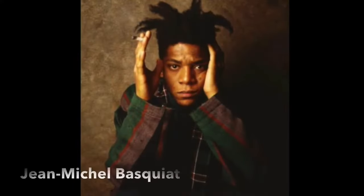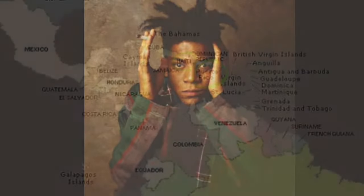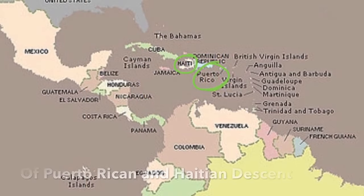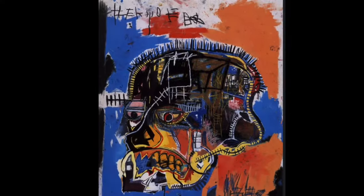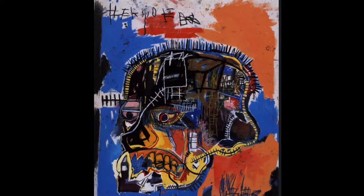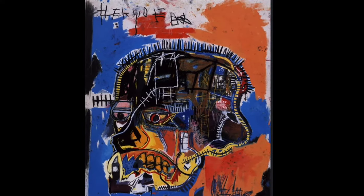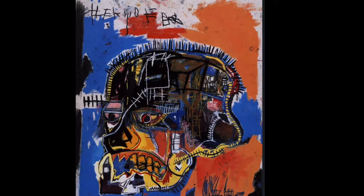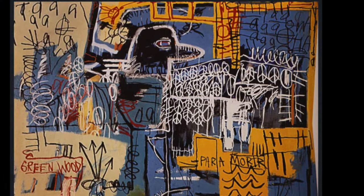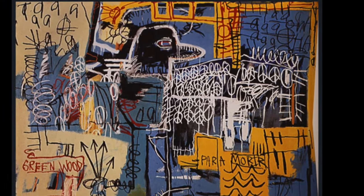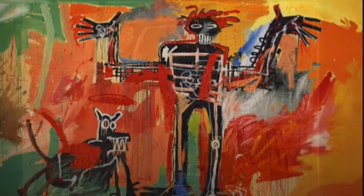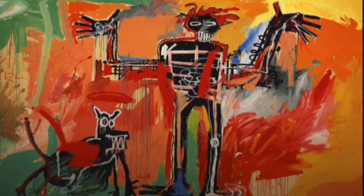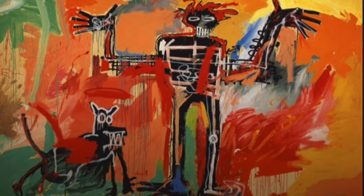Our next artist is Jean-Michel Basquiat, who is an American of Puerto Rican and Haitian descent. He is a neo-expressionist most known for his graffiti revolving around culture, music, and the dichotomies of social constructs. He is considered a pop icon and was multilingual, being able to speak fluently English, French, and Spanish.